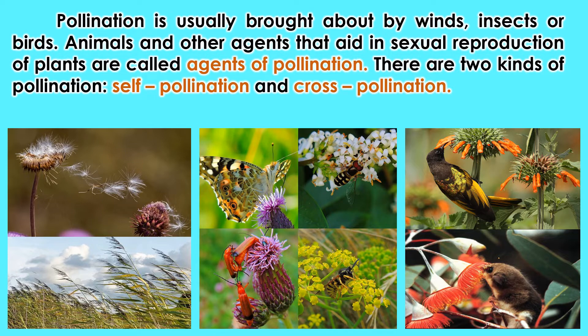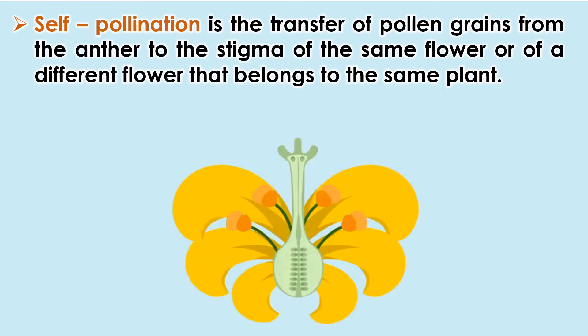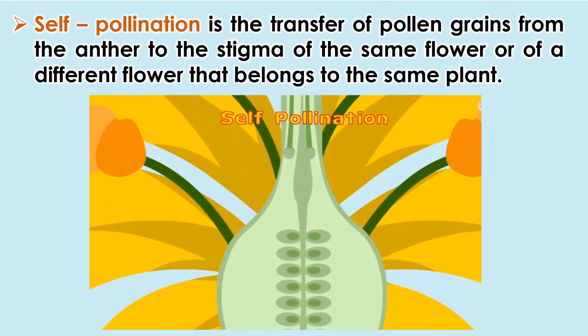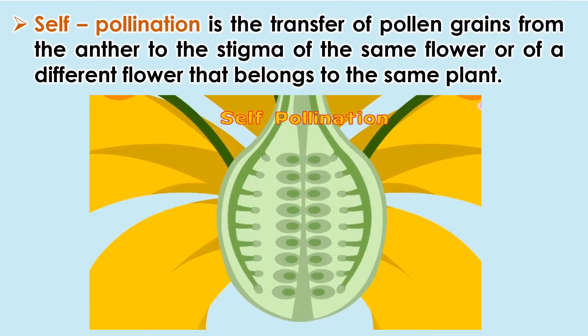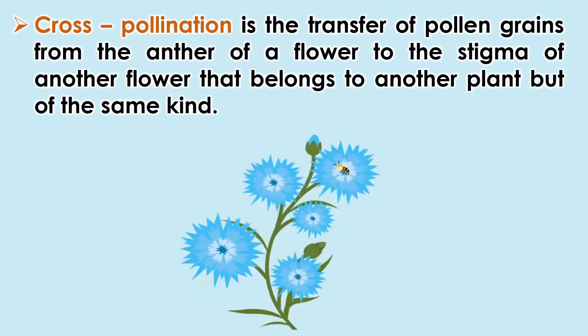There are two kinds of pollination: self-pollination and cross-pollination. Self-pollination is the transfer of pollen grains from the anthers to the stigma of the same flower, or of a different flower that belongs to the same plant. Cross-pollination is the transfer of pollen grains from the anthers to the stigma of another flower that belongs to another plant, but of the same kind. Cross-pollination is the most common form of pollination.